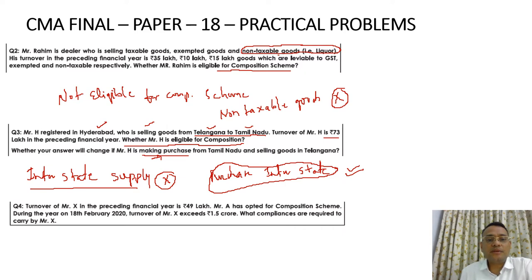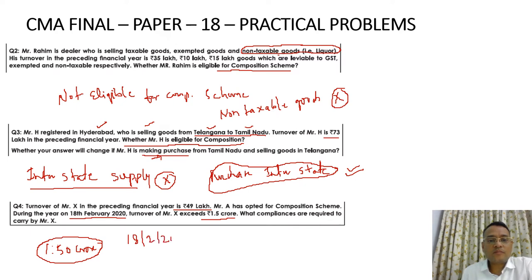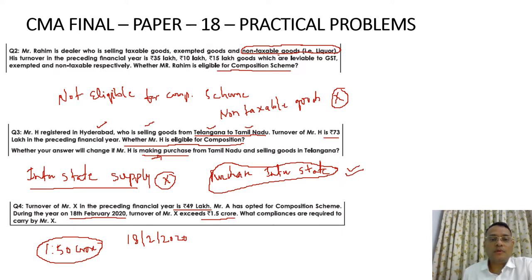Next, turnover of Mr. X in the preceding financial year was rupees 49 lakhs. Mr. X had opted for composition scheme, and during the year on 18th February 2020, his turnover exceeds 1.5 crores, which is the limit of composition scheme. You can be in composition scheme only if your turnover is up to 1.5 crores. What compliances are required to be carried out by Mr. X?